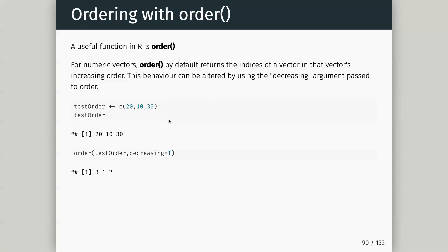A few questions: the order function. For numeric vectors, order by default returns the indices of the vector in increasing order. We have test_order as 20, 10, 30. If I do order with decreasing equals TRUE it's going to go from the highest — the third one — then the first, then the second. The third one's the highest, first one's the second highest, two is the smallest.